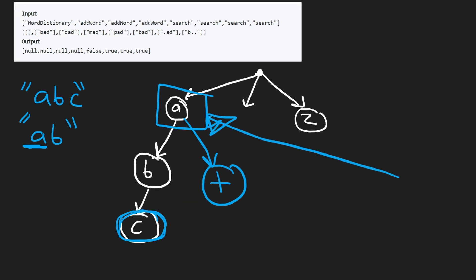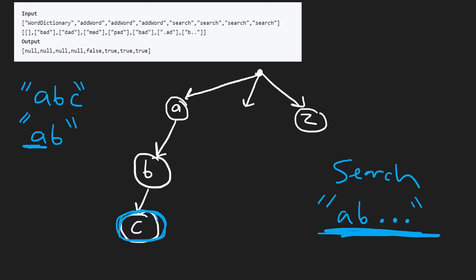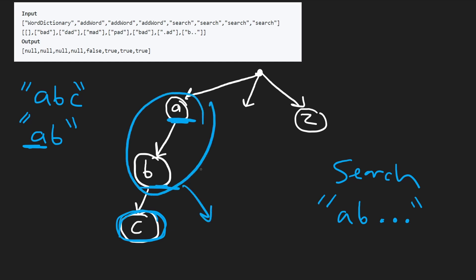All words starting with 'a' are grouped together — that's what makes this efficient and why it's called a prefix tree. If we search something like 'ab...' we go to 'a' then 'b', and from there do a depth-first search through all possible children, using a brute-force backtracking approach to find a word of the right length.